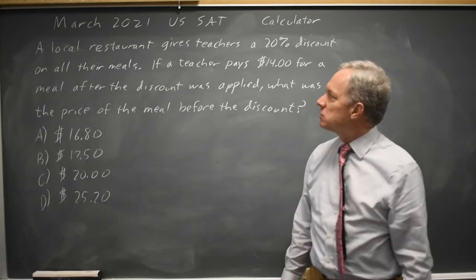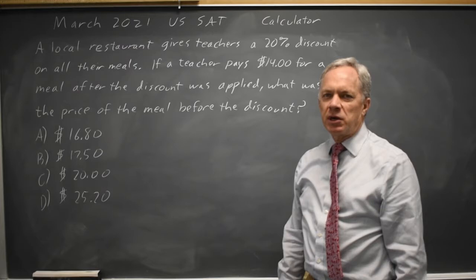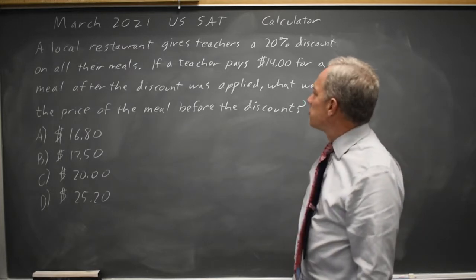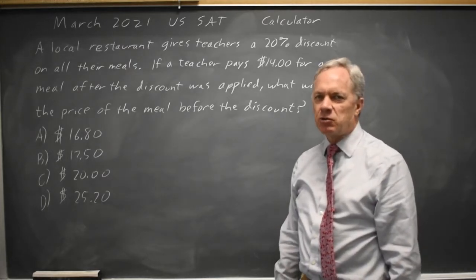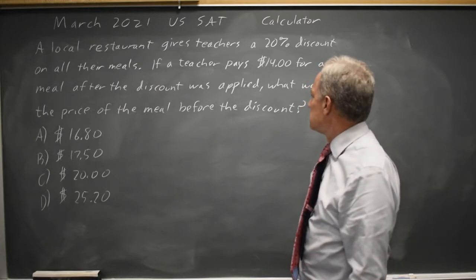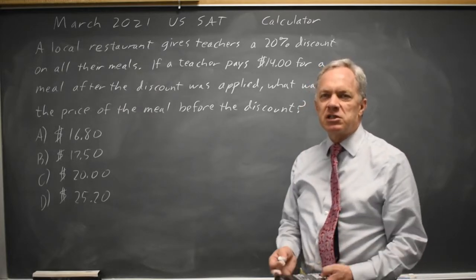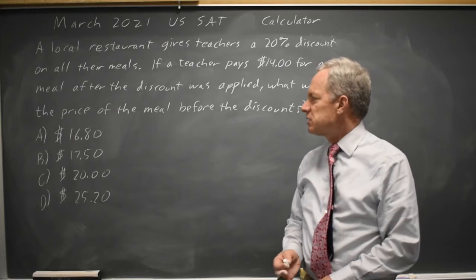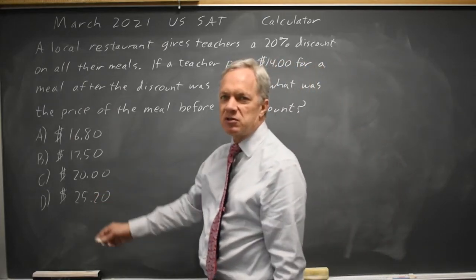The College Board describes a meal discount where a teacher pays $14 for a meal after the 20% discount. The question is, what was the price before the discount? One way to do this is to take 20% off each price and see which of these minus 20% of the given price gives you $14.